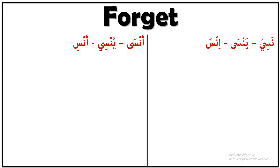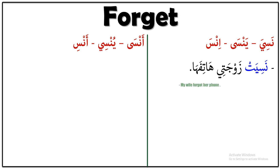Let's see examples for nasiya and yensa first. Nasiya zawjati hatifaha — it means 'my wife forgot her phone.' Nasiya = forgot, zawjati = my wife, hatifaha = her phone.